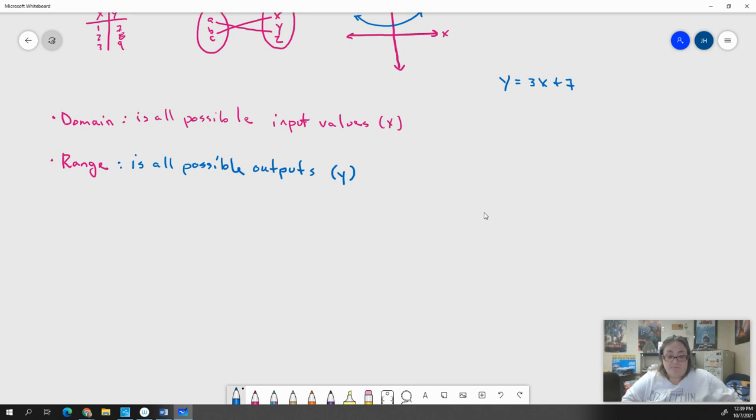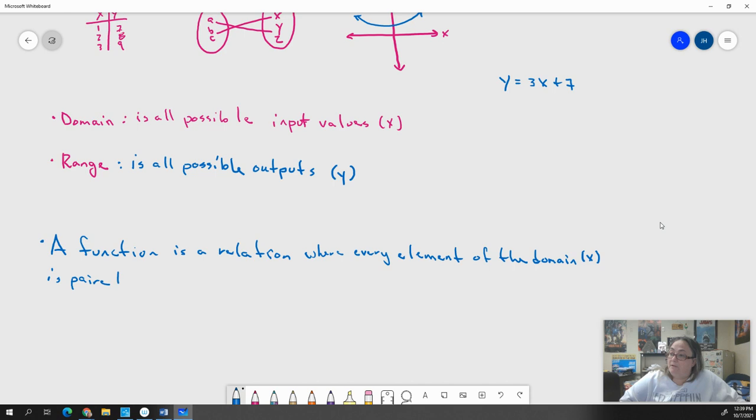A function is a relation. Let's put that down. A function is a relation. It is a set of ordered pairs. But it has certain rules attributed to it. So the biggest one is it's a relation where every element of the domain, so all of our X values is paired with one and only one element from the range.